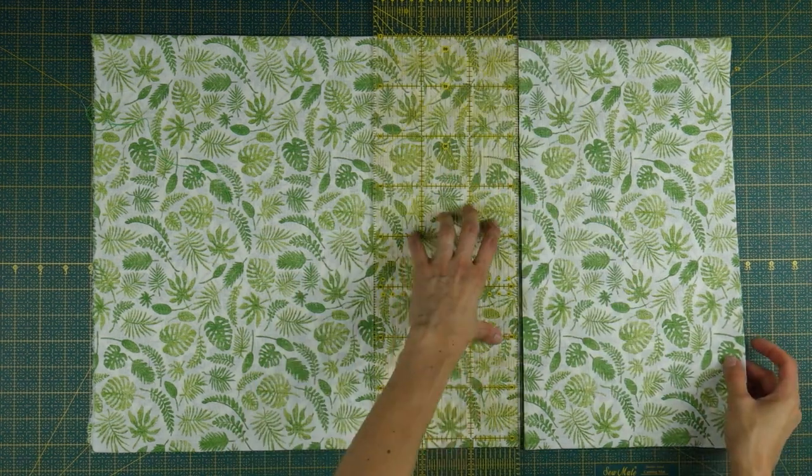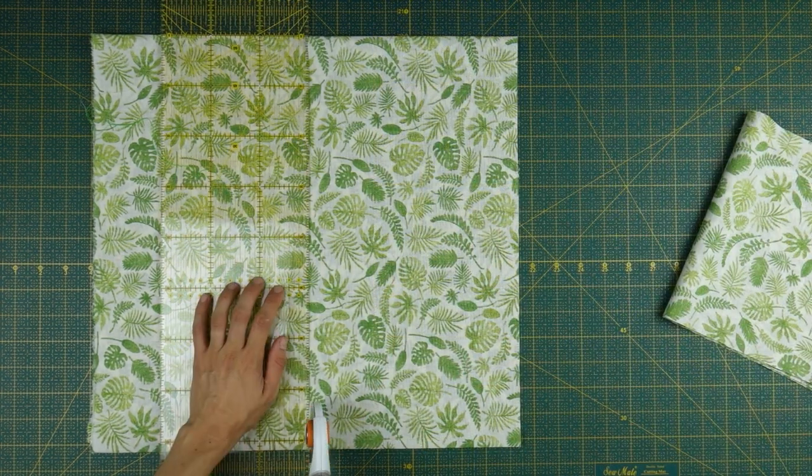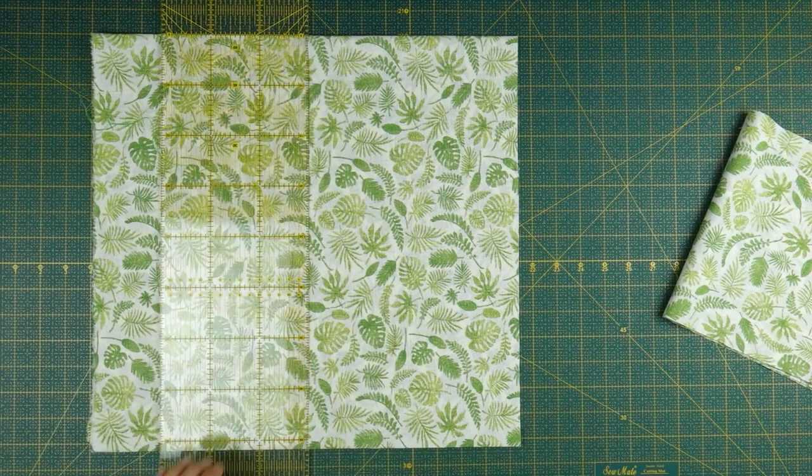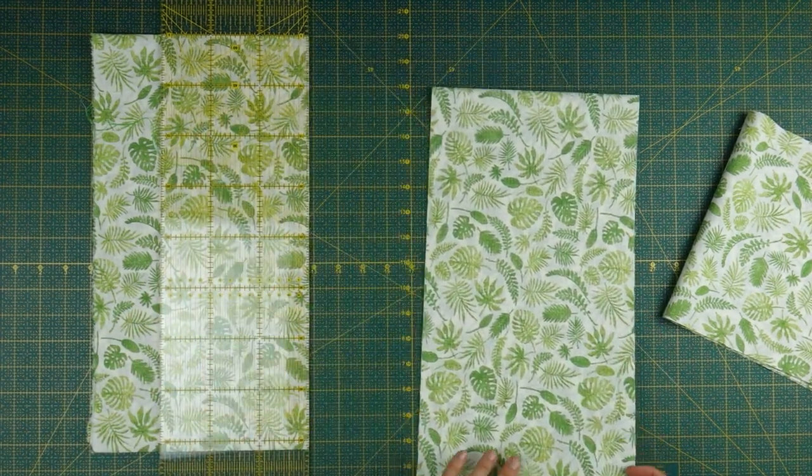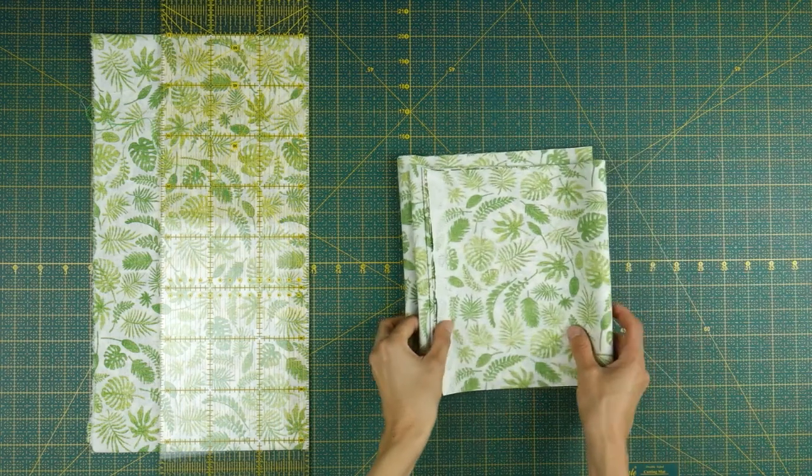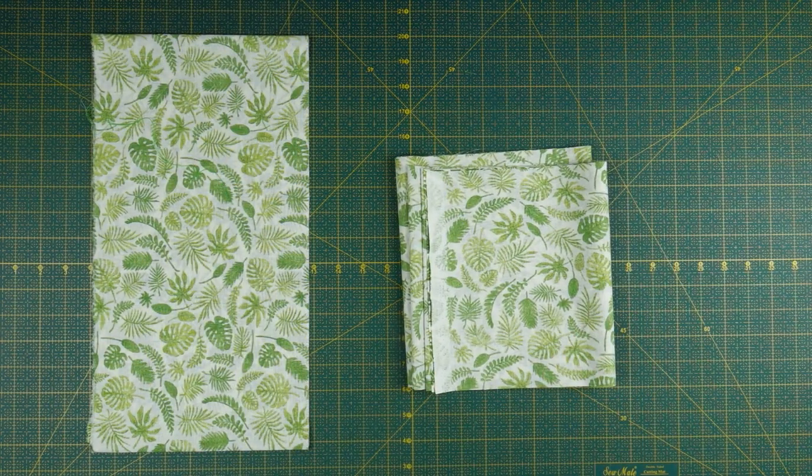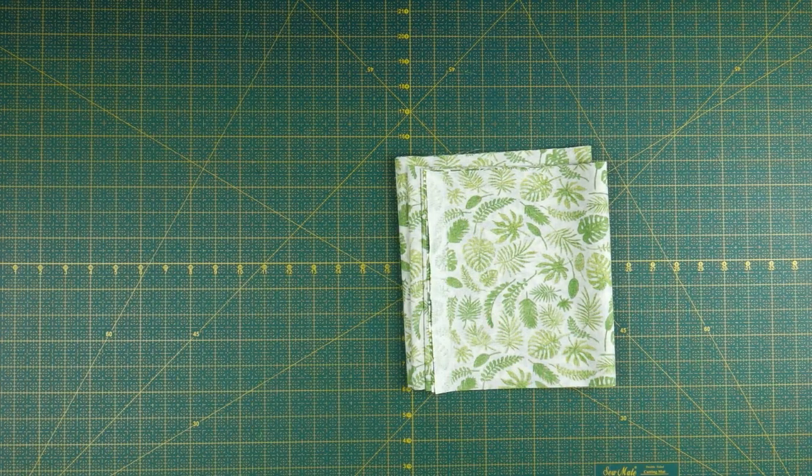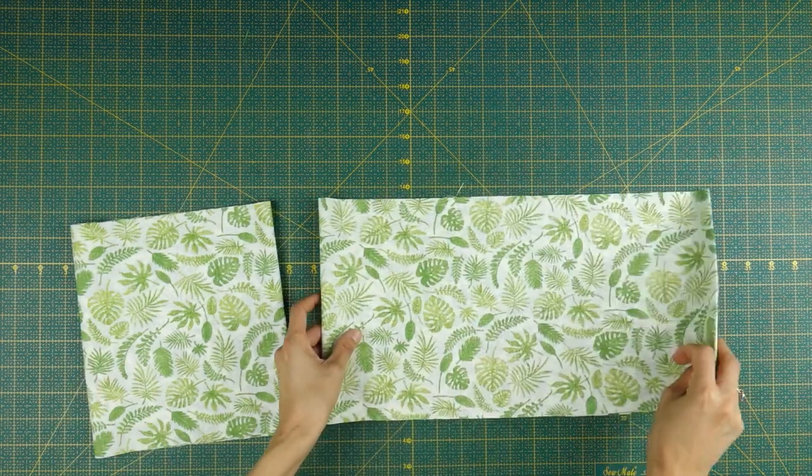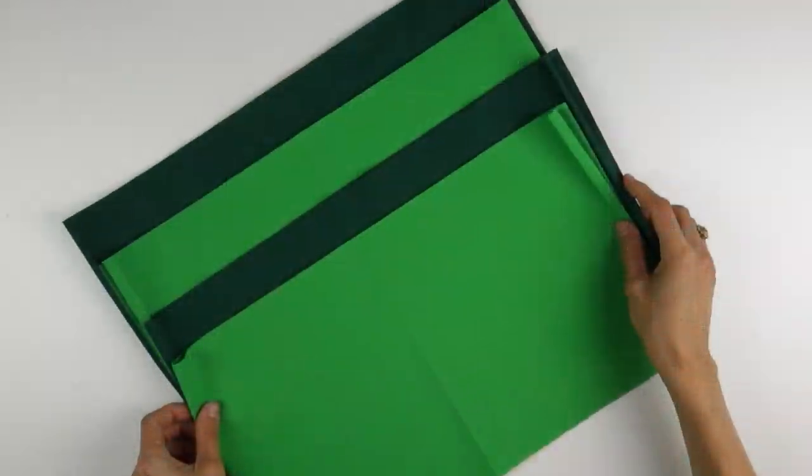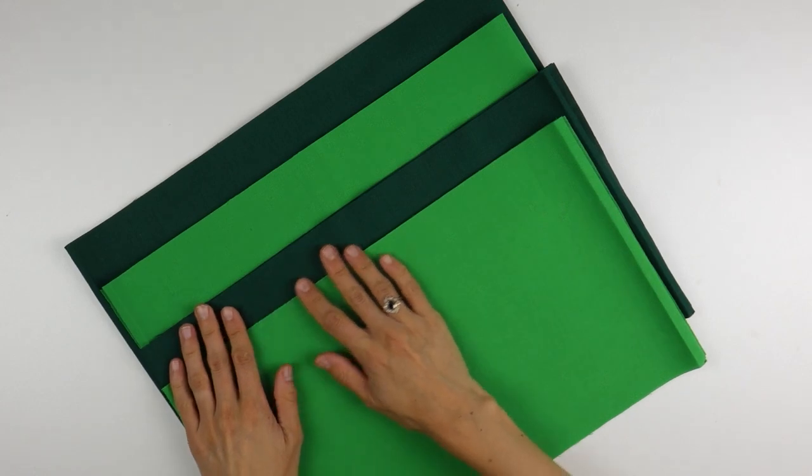Then, placing the ruler at 90 degrees, we can cut our stripes. Of course, you can use a pair of scissors and in that case, I highly recommend you to trace the lines with tailor chalk or a regular pen before cutting. I have already cut two stripes in the other two fabrics, so we can now move on to cutting our triangles.